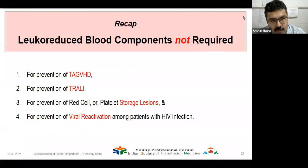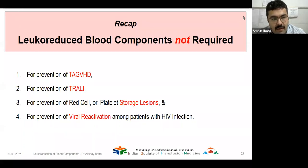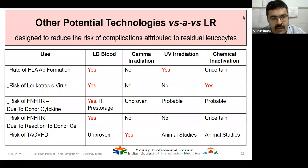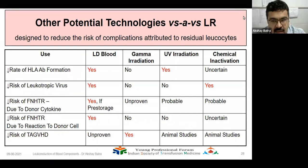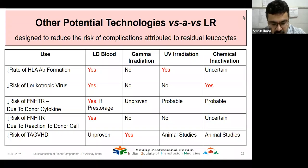Leukoreduced blood components are NOT required for the prevention of transfusion-associated graft-versus-host disease (TA-GvHD), prevention of TRALI, prevention of red cell or platelet storage lesions, or prevention of viral reactivation — for these indications, leukoreduction is not even recommended. Comparing leukofiltration with other technologies: for reduced rate of HLA antibody formation, only leukodepleted blood products help; for reduction of leukotropic viruses, only chemical inactivation besides leukofiltration helps; for reduction of risk of FNHTR, only leukodepletion helps; and for reduction of TA-GvHD risk, only gamma radiation helps — leukodepletion has unproven or no effect on the risk of TA-GvHD.